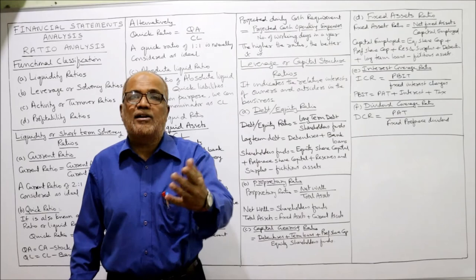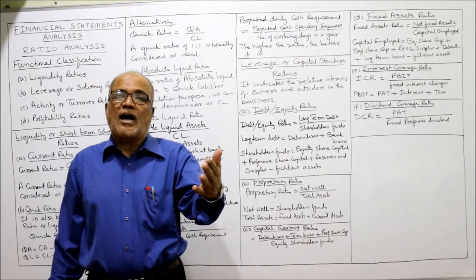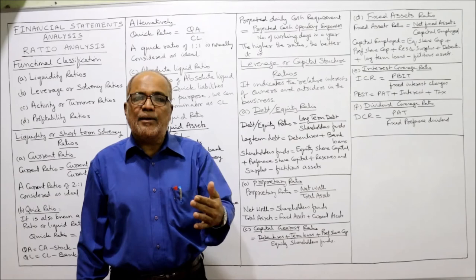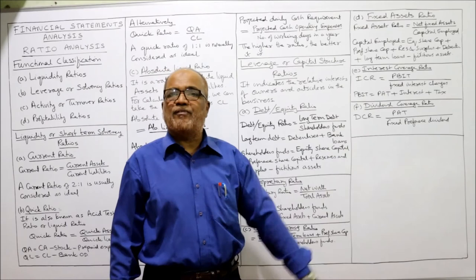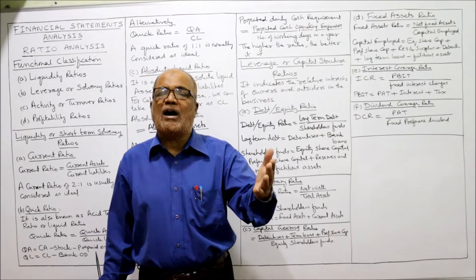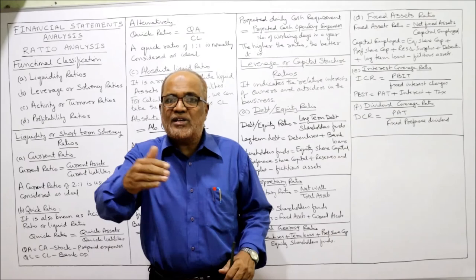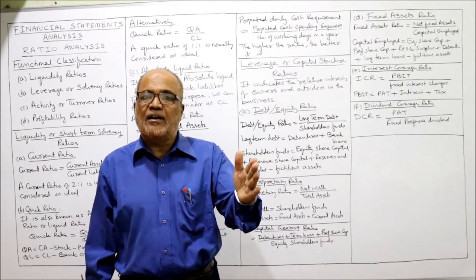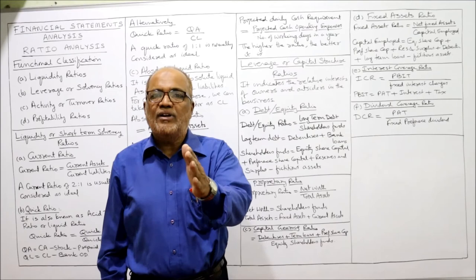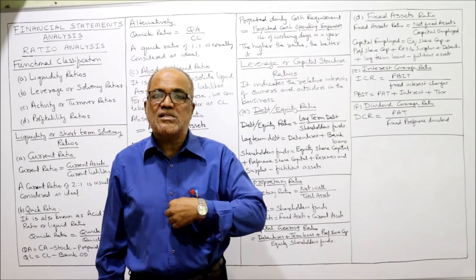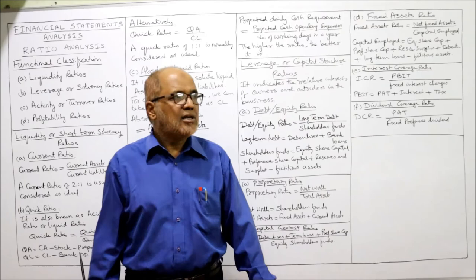The next ratio is dividend coverage ratio — how many times our PAT, profit after tax, is of fixed preference dividend. The formula is PAT divided by fixed preference dividend. For example, if PAT is 1 lakh rupees and annual fixed preference dividend is 10,000 rupees, then 1 lakh divided by 10,000 gives 10 times. Dividend coverage ratio is 10 times, meaning our PAT is 10 times of our fixed preference dividend.